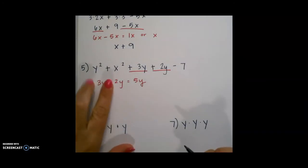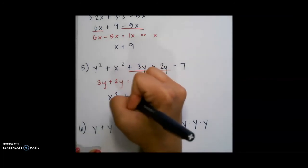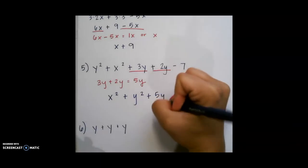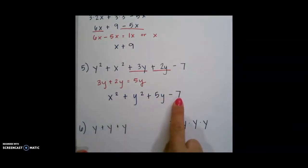We are going to start with our terms that have exponents, and usually you are going to go alphabetically. So I have x squared plus y squared plus our next term with a variable, and just drop down the minus 7. This is as far as I can simplify this because those are the only like terms.